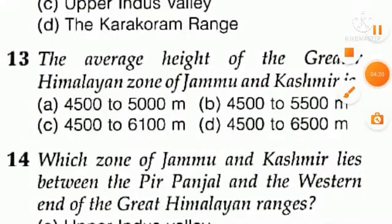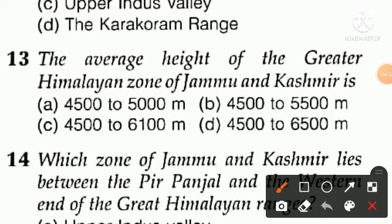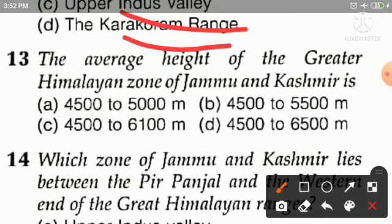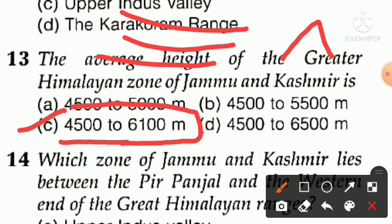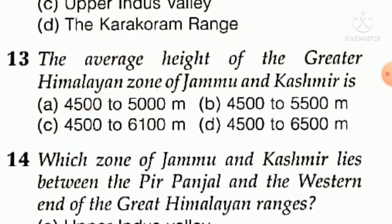Question number thirteen: the average height of the Greater Himalaya zone of Jammu and Kashmir. Option A is 4500 to 5000 meters, option B is 4500 to 5500 meters, option C is 4500 to 6100 meters, option D is 4500 to 6500 meters. Option C is right — 4500 to 6100 meters is the average height of the Greater Himalayan zone. Remember this.